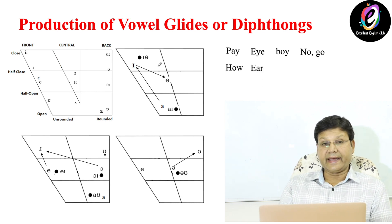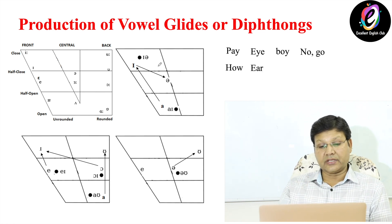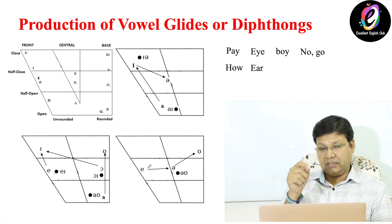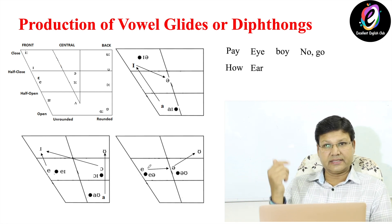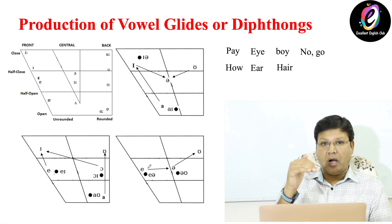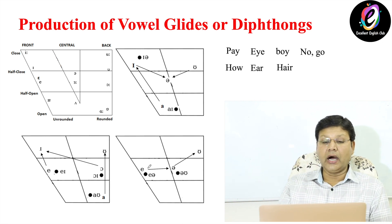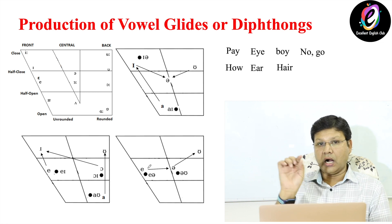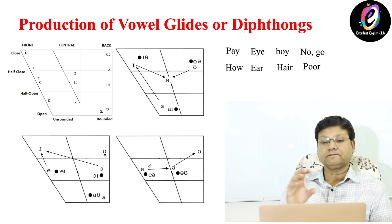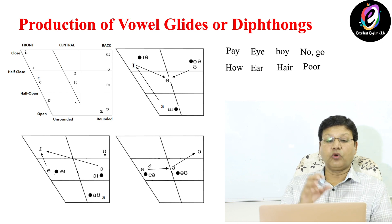The next diphthong is E-A, as in 'there.' The last one is U-A, as in 'poor' and 'tour.' These are all the vowel glides.